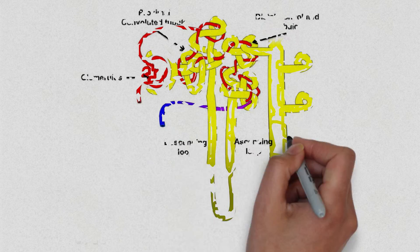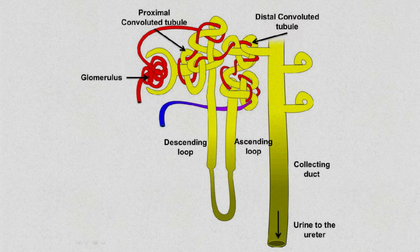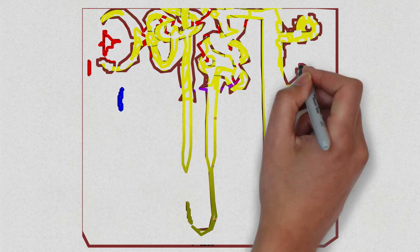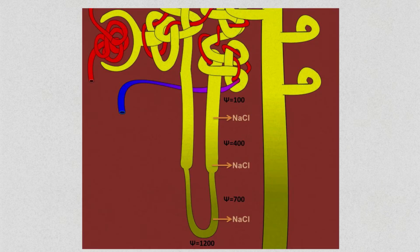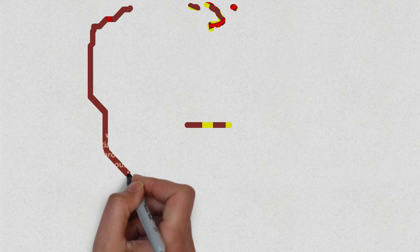To understand reabsorption of water it's easiest to start at the loop of Henle. At the loop of Henle the nephron has the lowest water potential, so at this point water should move into the nephron by osmosis, but the loop of Henle and the ascending limb are impermeable to water. Sodium ion protein channels pump sodium out of the ascending limb into the interstitial region. This lowers the water potential in the interstitial region and increases the water potential in the ascending limb, but water cannot move out of the ascending limb as it is impermeable to water.